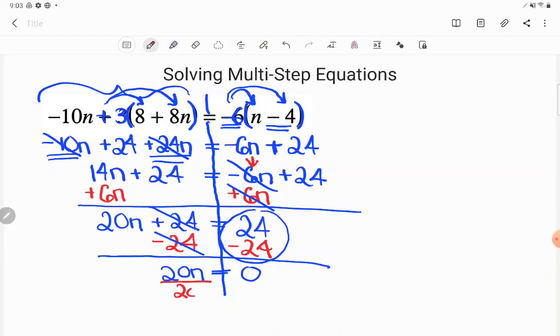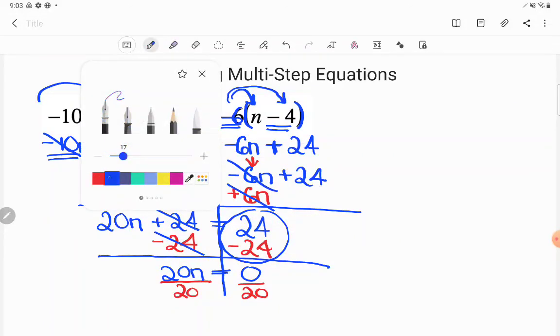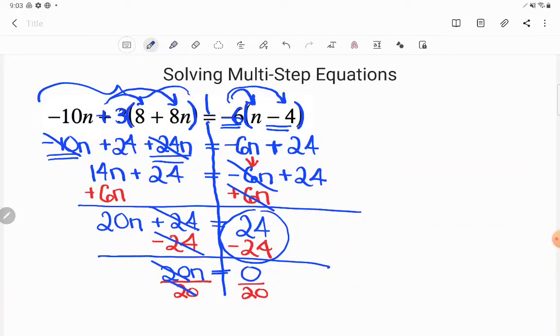But I want n to be alone. So I better divide away this 20. And I can very quickly now see that this is going to cancel. So n's alone. And zero divided by 20, of course, is just zero. And once again, my solution here is zero.